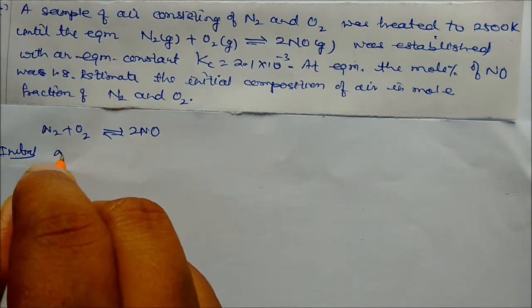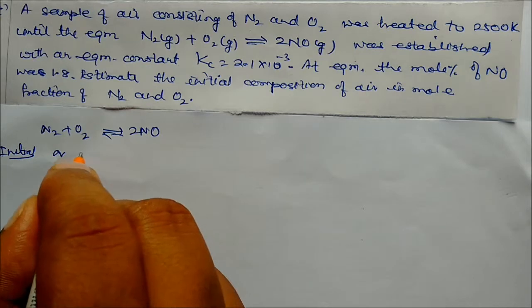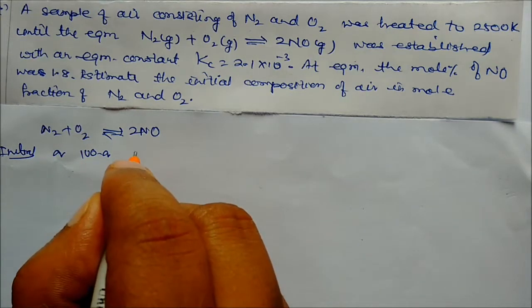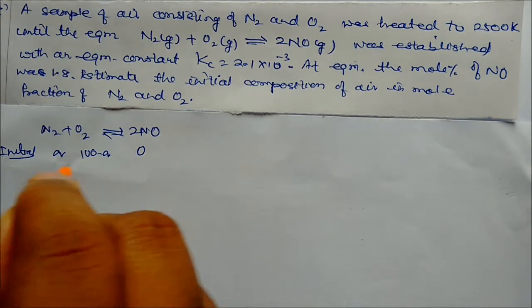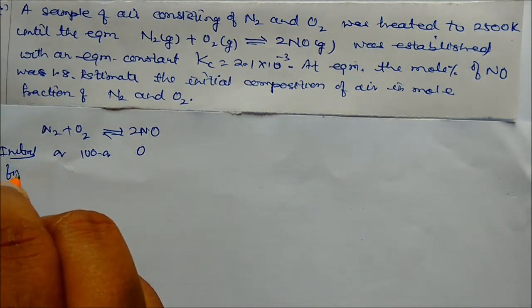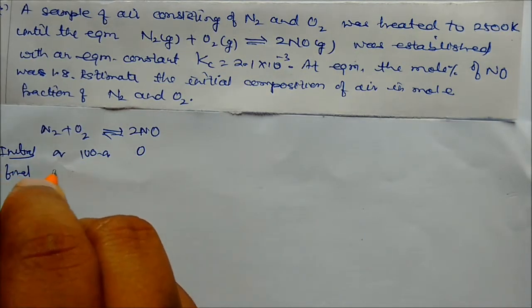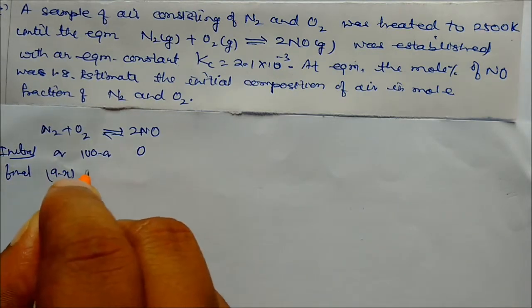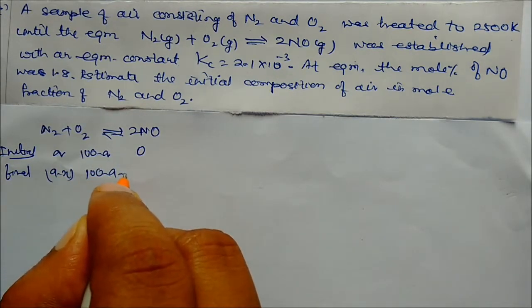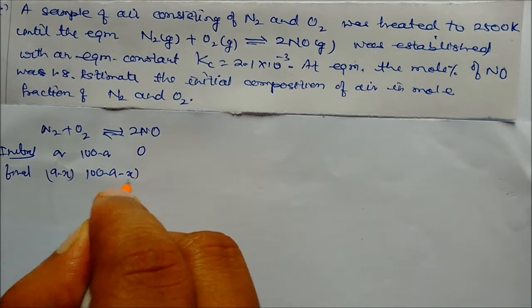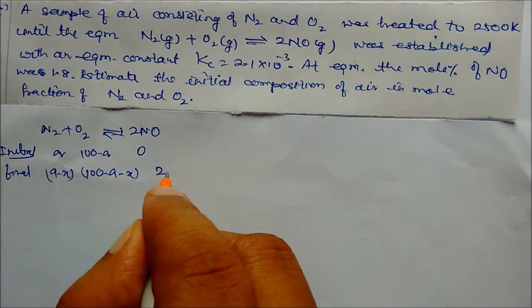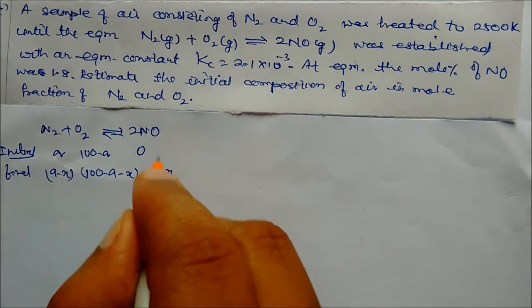Taking percent composition: N₂ initial = A%, O₂ initial = (100 − A)%, NO initial = 0. At equilibrium: N₂ = A − x, O₂ = 100 − A − x, NO = 2x.